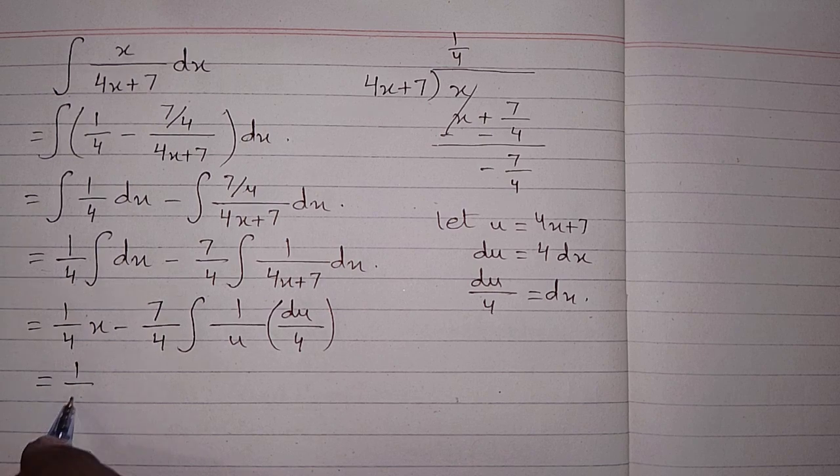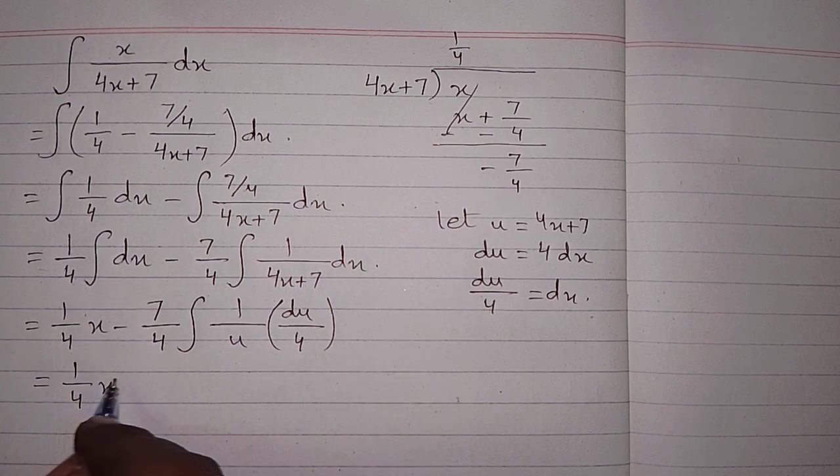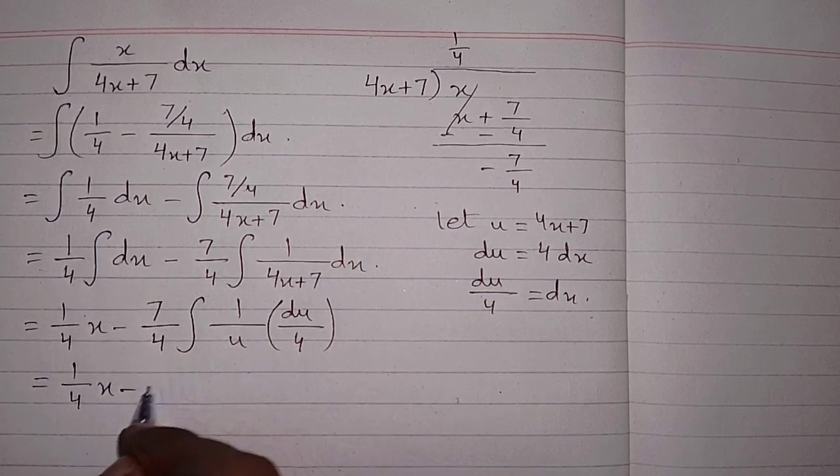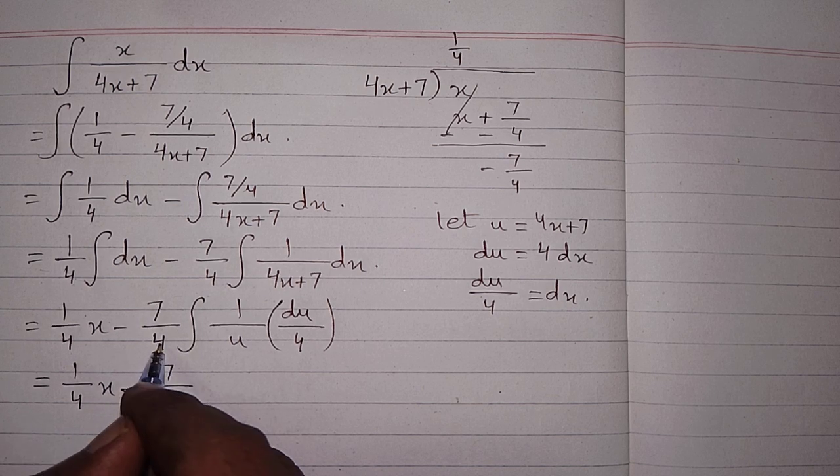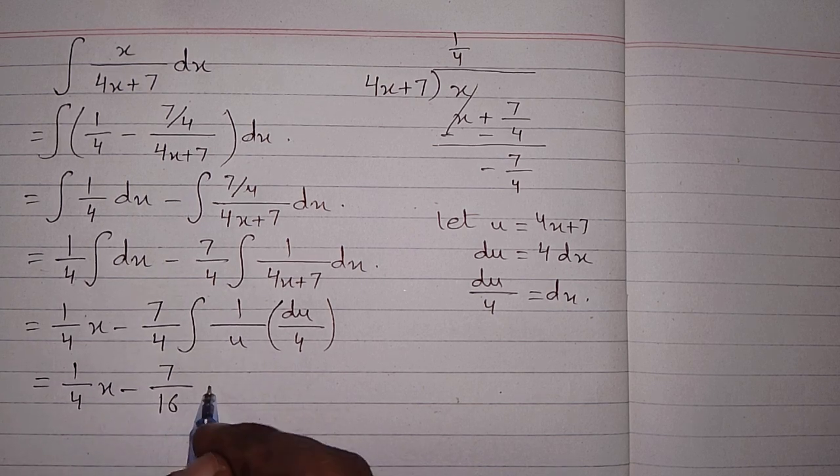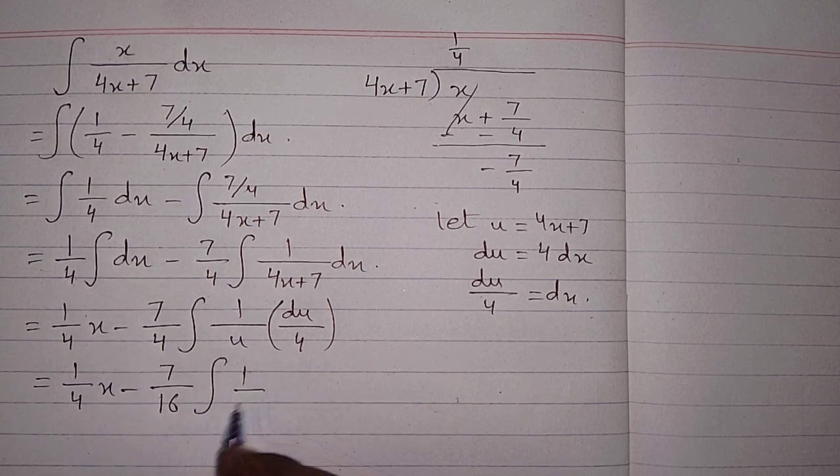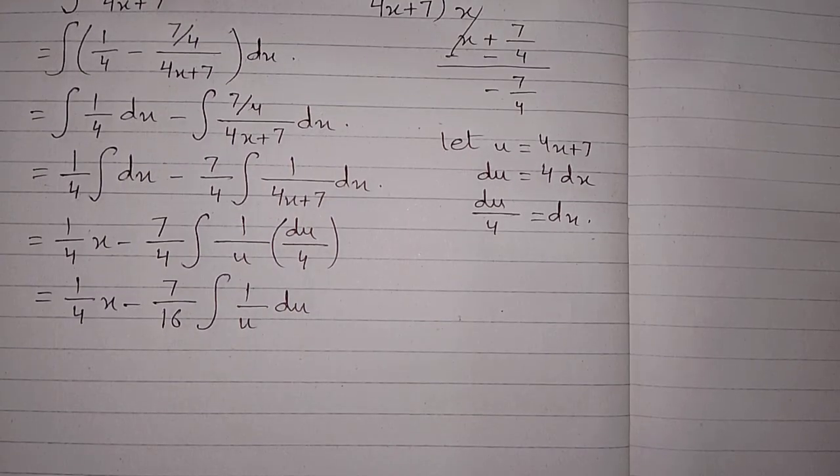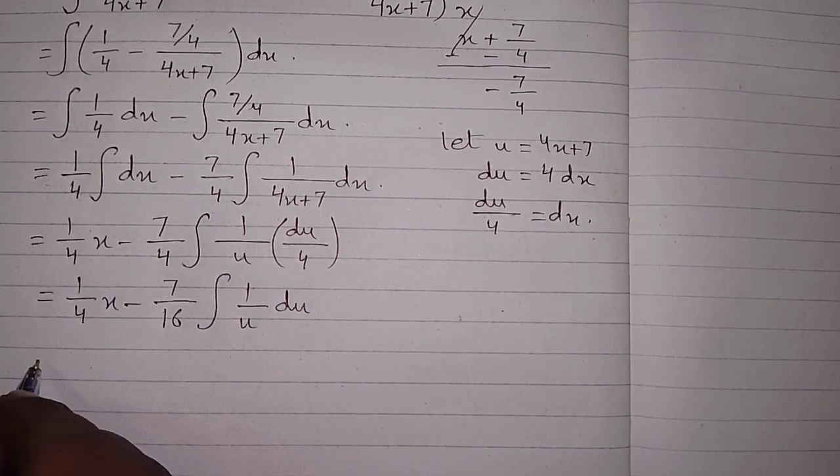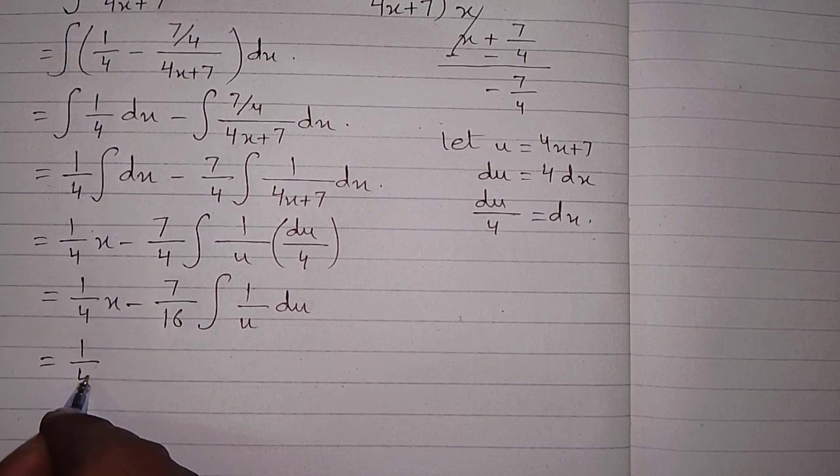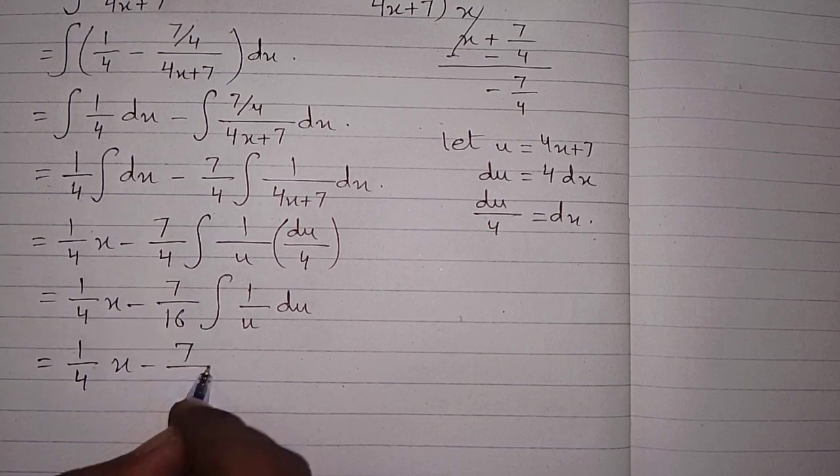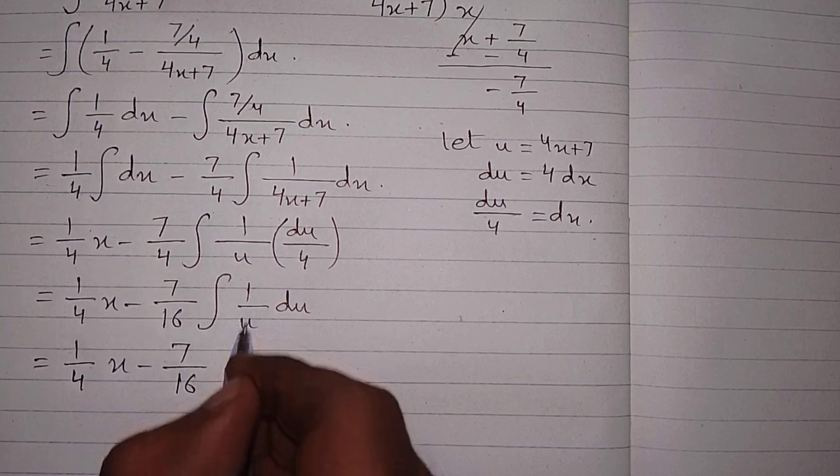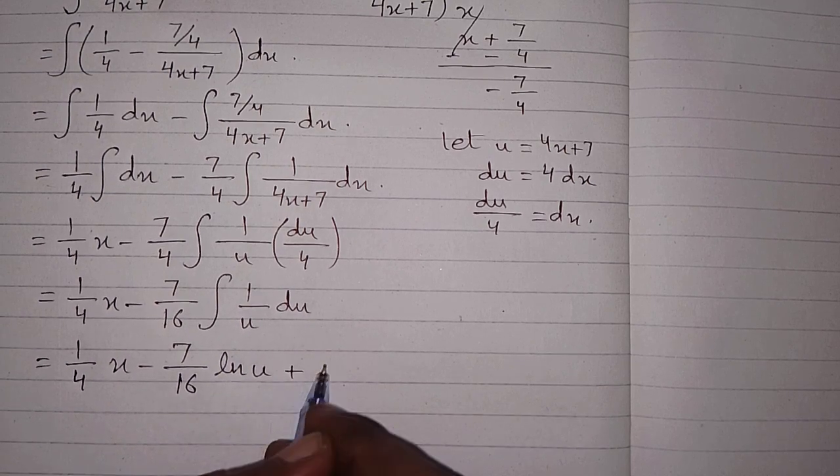Now we have 1 upon 4 x minus 7 upon—we can multiply this 4 and this 4 so we have 16—integral of 1 upon u. The integral of 1 upon u is ln of u plus c, where c is the constant of integration.